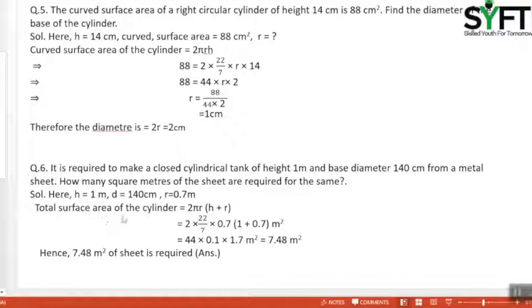Total surface area of the cylinder equals 2πR(H + R). That's 2 × 22/7 × 0.7 × (1 + 0.7). This equals 44 × 0.1 × 1.7, which by calculation gives 7.48 m². Hence, 7.48 m² of sheet is required.